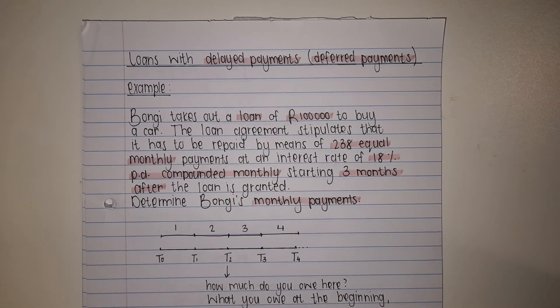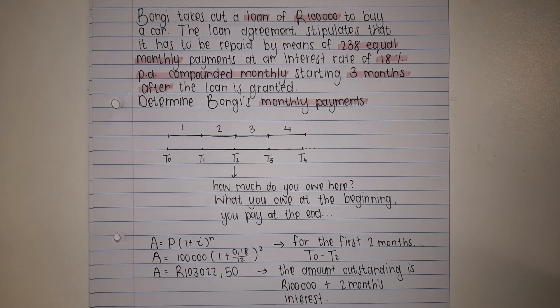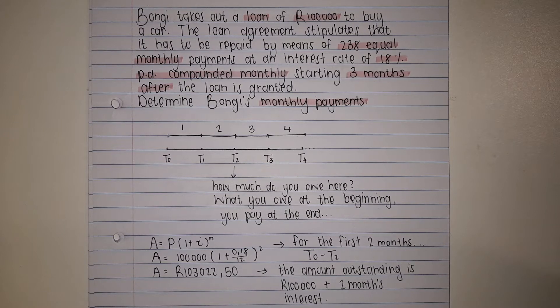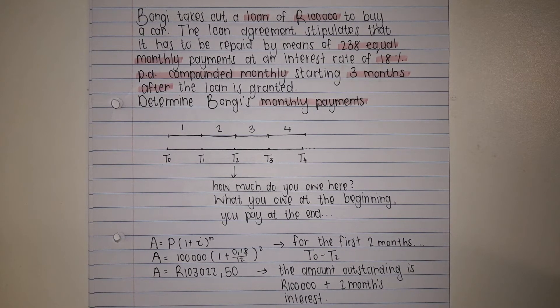Determine Bangu's monthly payments. Now it's very nice that they say she can only start paying three months after, but that doesn't mean the money stays at 100,000.